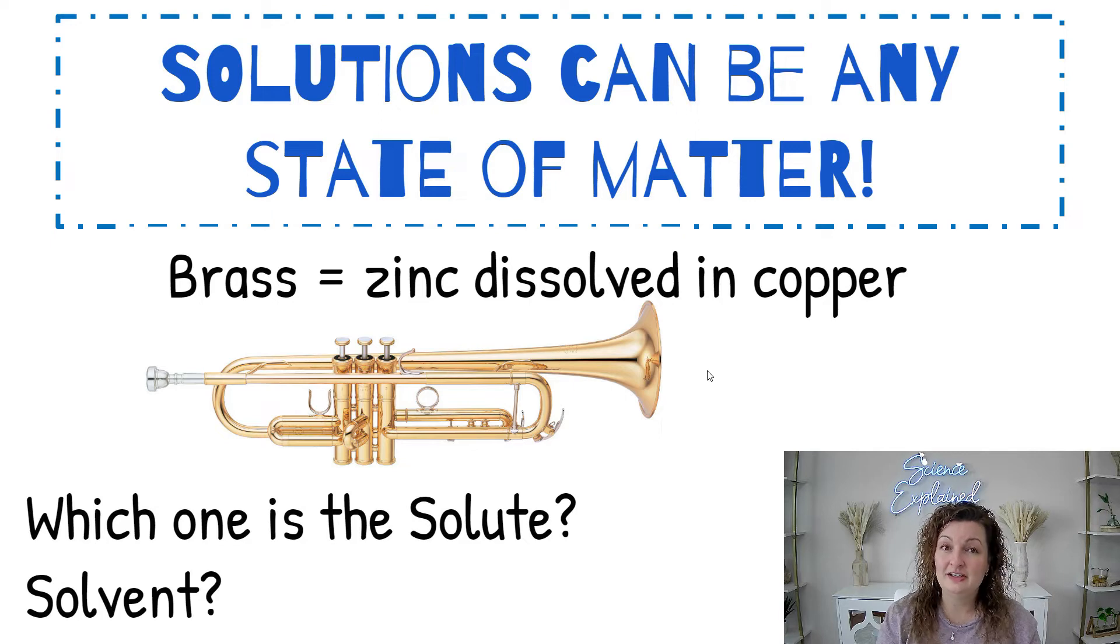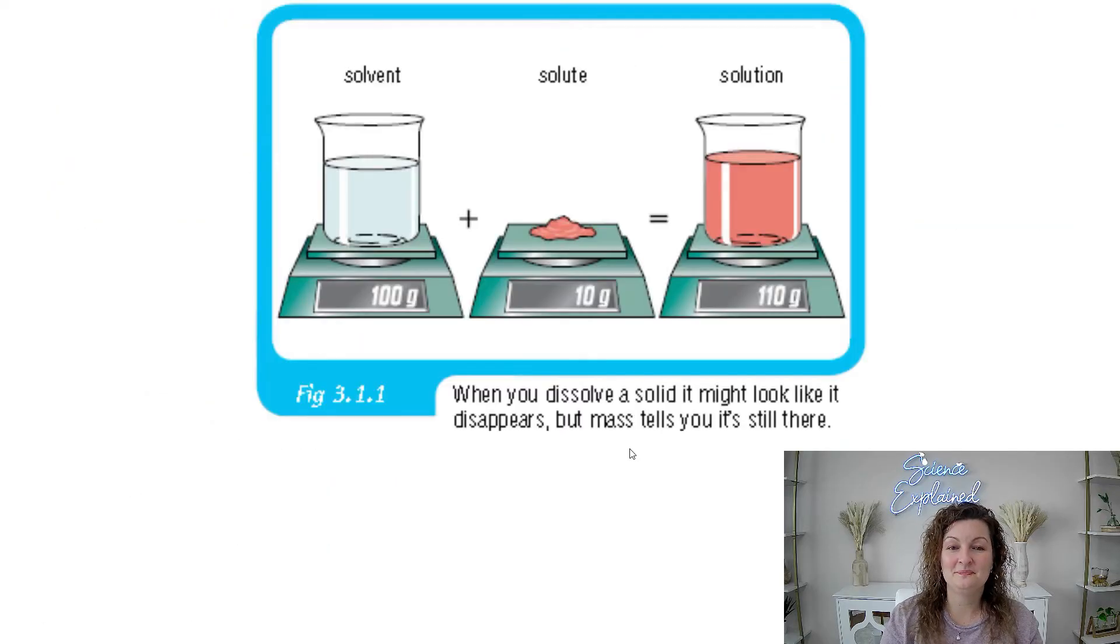Solutions can be any state of matter: solid, liquid, gas. We usually think of solutions being liquids, like Kool-Aid, but they also happen in solids and gases. Here's an example of a solid: brass. Have you ever seen a brass instrument? Brass is actually zinc dissolved in copper. Which one would be the solute and which would be the solvent? Pause your video, then come back and I'll tell you the answer. Since zinc is being dissolved into copper, zinc is the solute and copper is the solvent. Did you get it right? Let me know in the comments.